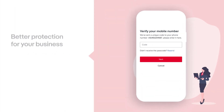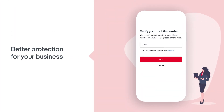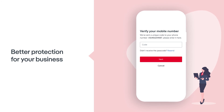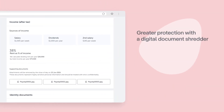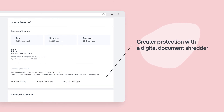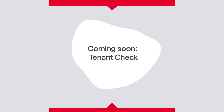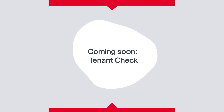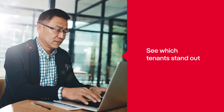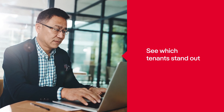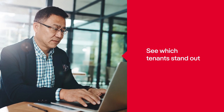What's more, IGNITE provides you and your tenants market-leading security features including two-factor authentication. Documents are digitally shredded, reducing the risk of storing sensitive information. And you'll soon have greater confidence in your tenant selection by seeing at a glance which tenants stand out with a tenant verification report, which checks their identity and rental history.